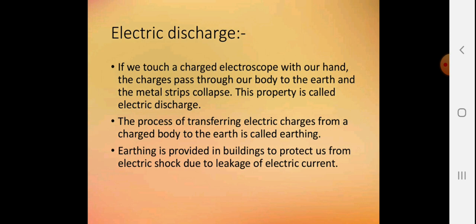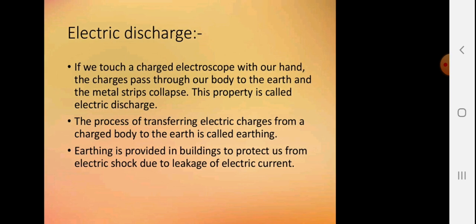Electric discharge: If we touch a charged electroscope with our hand, the charge passes through our body to the earth and the metal strips collapse. This property is called electric discharge. The process of transferring electric charges from a charged body to the earth is called earthing. Earthing is provided in buildings to protect us from electric shock due to leakage of electric current.